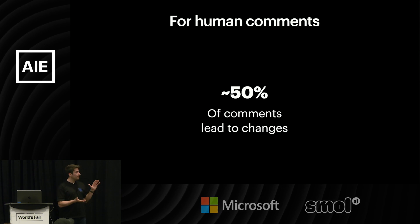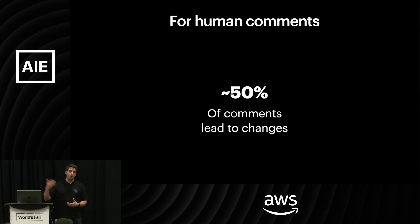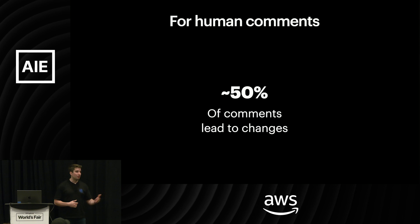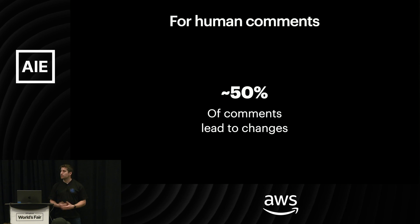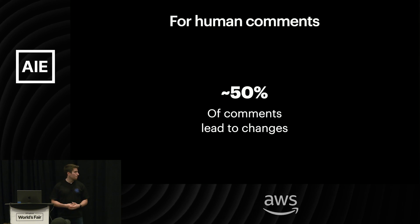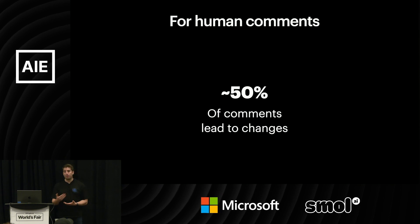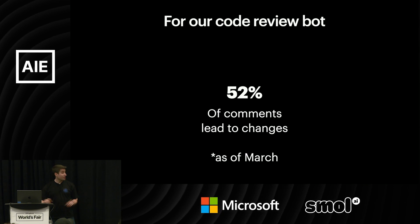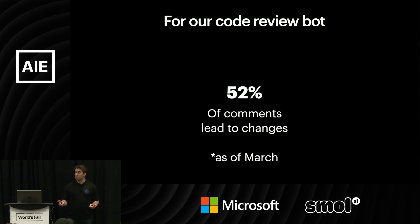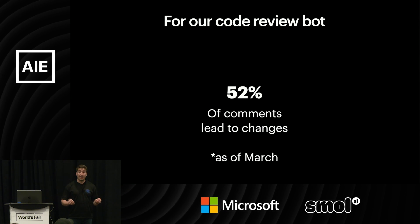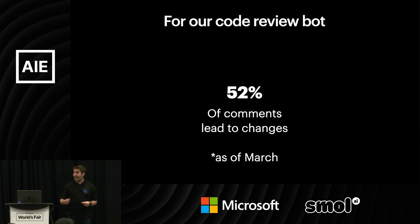And some are purely preferential — 'I would do it this way,' someone disagrees. In healthy code review cultures, that space for disagreement exists. And so we started to measure this and ask: could we get the bot here? Over time, we actually have. As of March, we're at 52%, which is to say that if you prompt it correctly, you can get there.